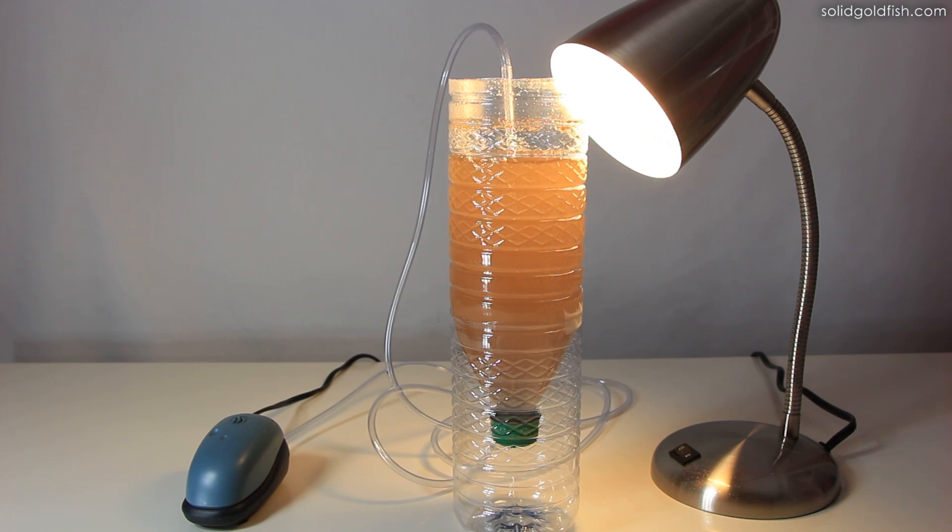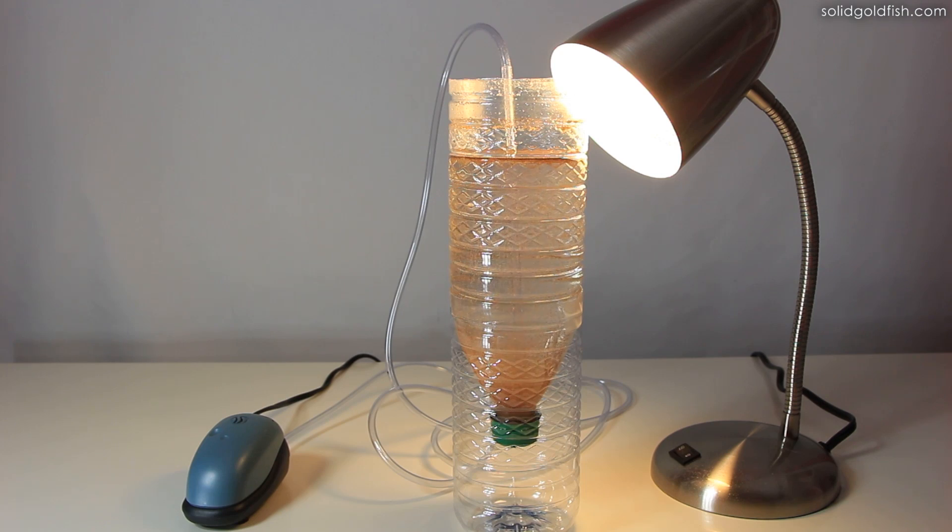At this point, turn off the air pump and allow the hatched brine shrimp to settle to the bottom. If you position the light source so that it's aimed right at the bottom, the brine shrimp will settle faster because they're attracted to light.